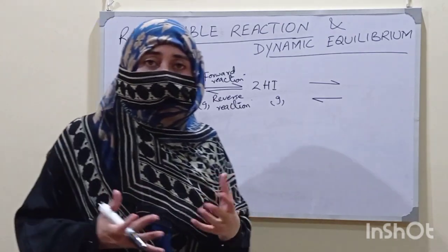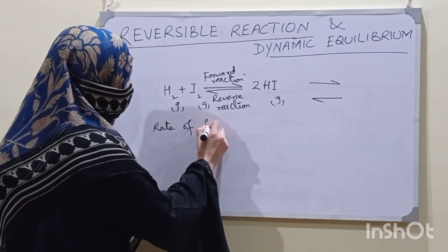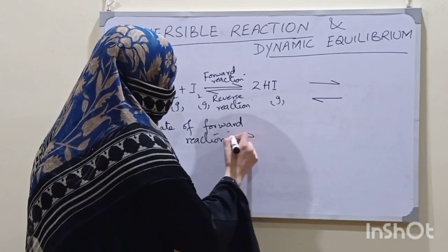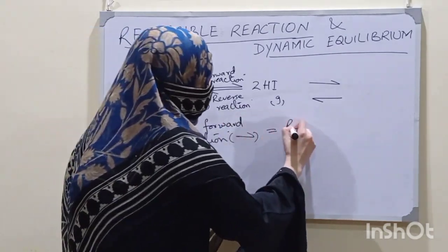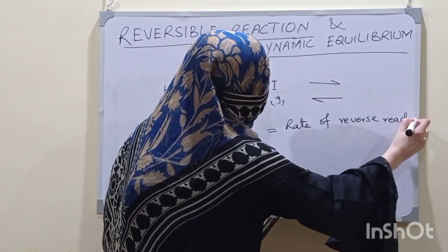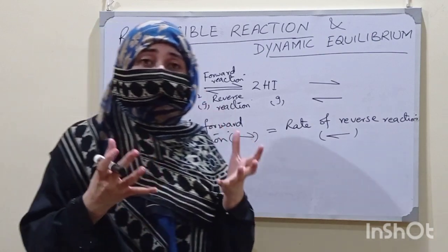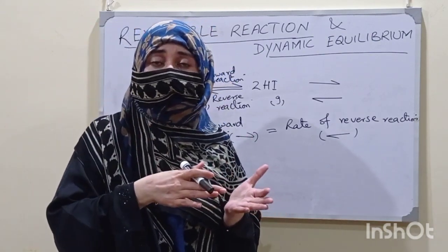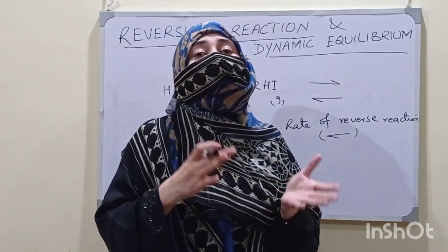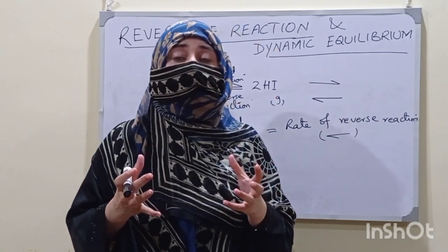There would be a time when the rate of forward reaction becomes equal to the rate of reverse reaction. This means the speed at which reactants are converted into products is the same speed at which products are converted back into the reactants. We call this condition equilibrium.